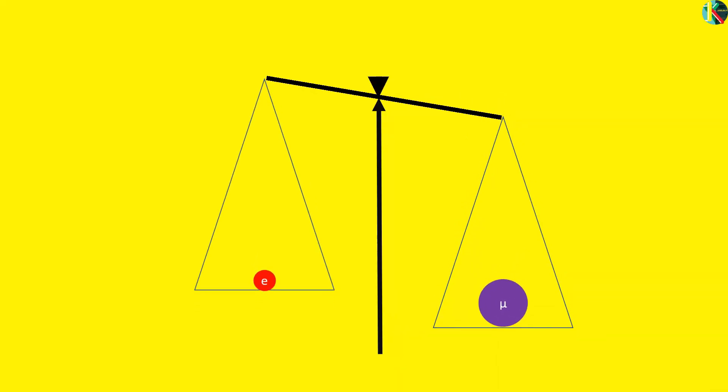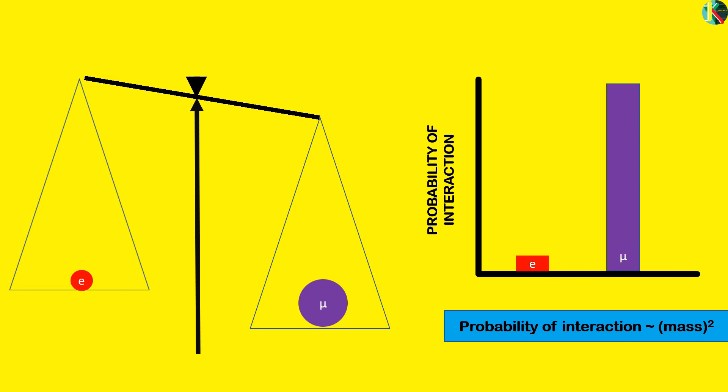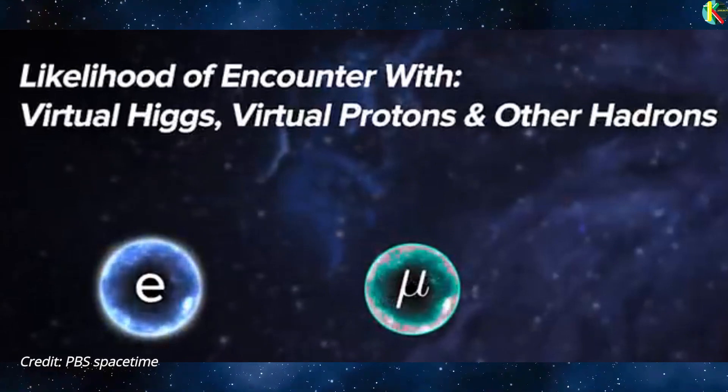The muon is 200 times more massive than the electron and the probability of interaction between the particles and some massive virtual particle is proportional to its mass squared. So the muon is 40,000 times more likely to be perturbed.